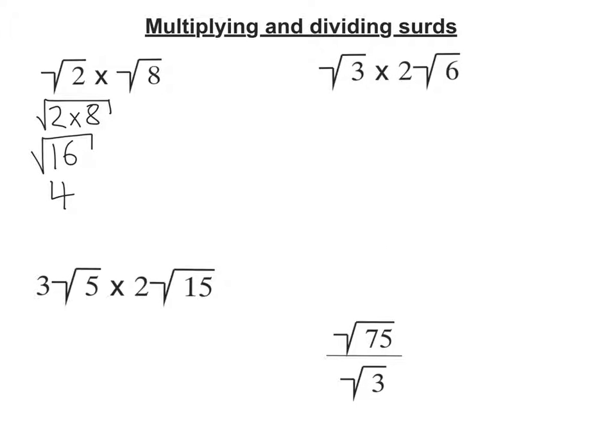So root 3 times 2 root 6. Well, what's happening between the 2 and the root 6? Well, there's a multiply there. So we've got root 3 times 2 times root 6. So we can reorder that. Let's go 2 times root 3 times root 6.